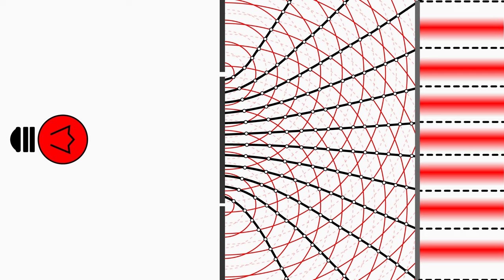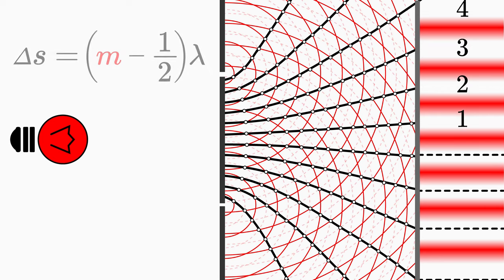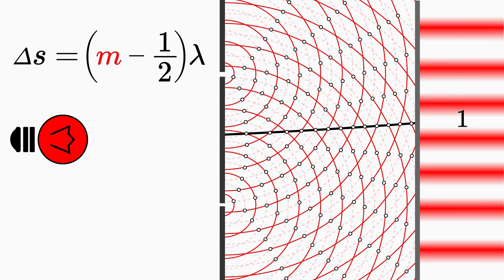These dark fringes are described by the integer m, which runs from one to infinity. The first dark fringe with the path difference of half lambda you get when m equals to one, and so on.